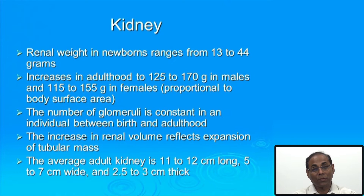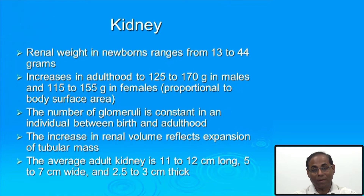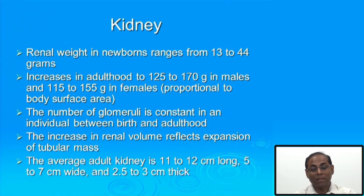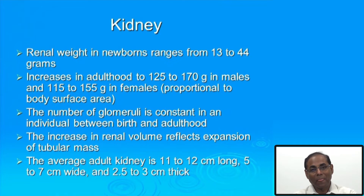A huge amount of structural modification takes place in the kidney to enable its excretory function as well as regulation of blood pressure, electrolyte balance, and red blood cell production. The average kidney size in an adult is 11 to 12 centimeters long, 5 to 7 centimeters wide, and 2.5 to 3 centimeters thick. In any chronic renal disease the kidney volume shrinks, and that is why on ultrasound, physicians check kidney size — whether normal or shrunken — making knowledge of normal size very important.